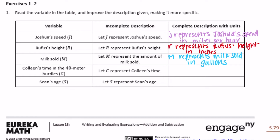Colleen's time in the 40-meter hurdles — let C represent Colleen's time. That's not a very long race, so it's probably being measured in seconds, probably not in minutes or hours or days or weeks or years. So let's say C represents Colleen's time in seconds.